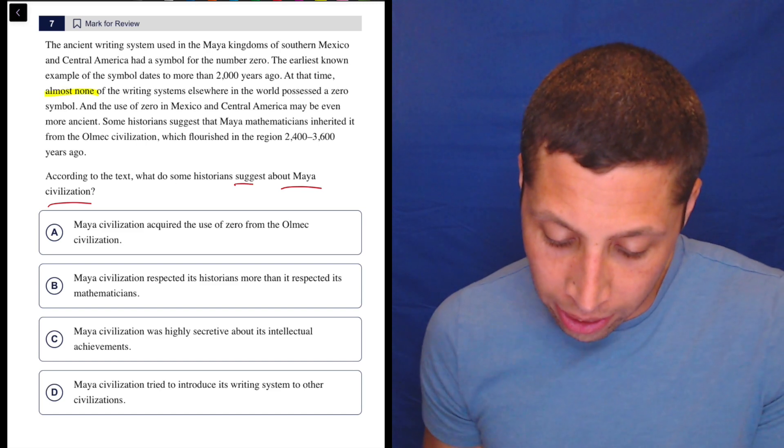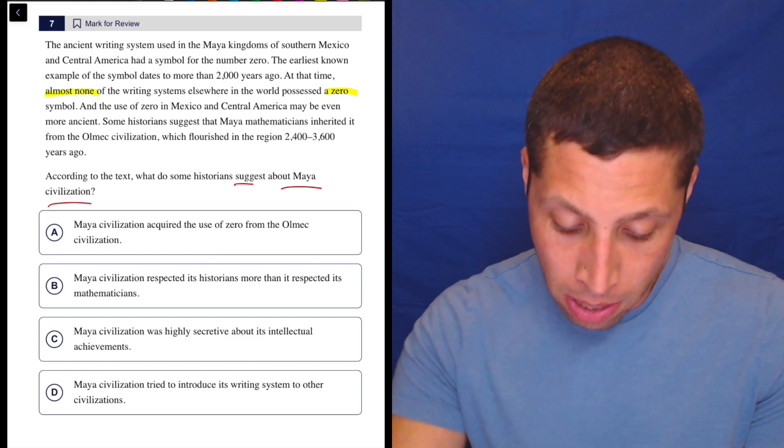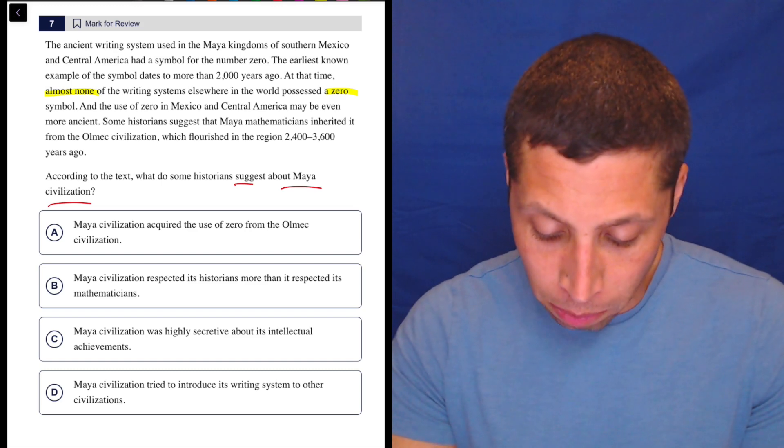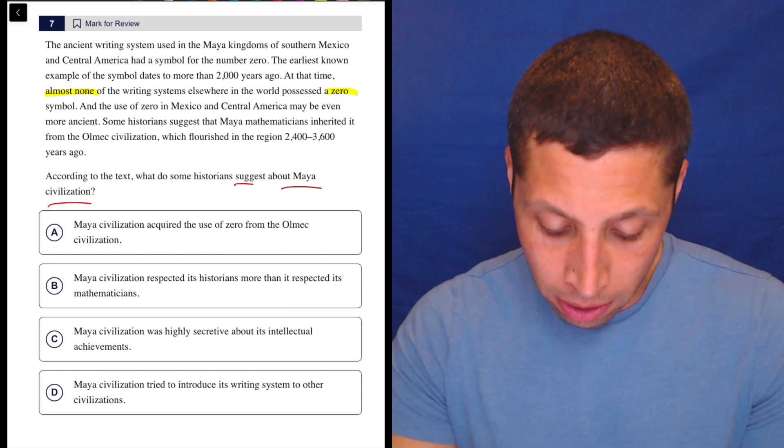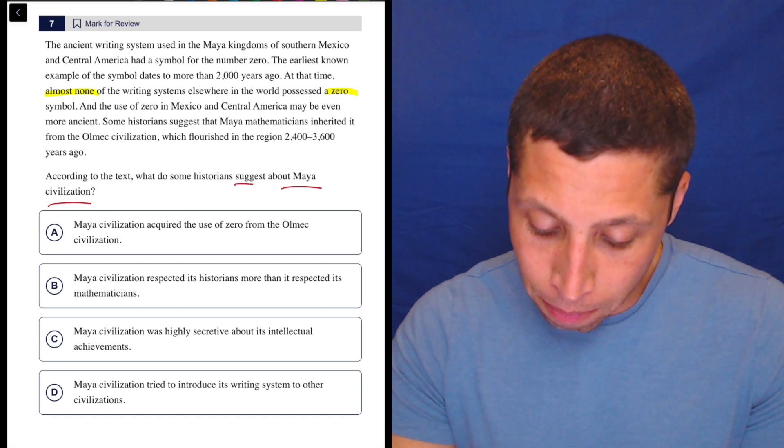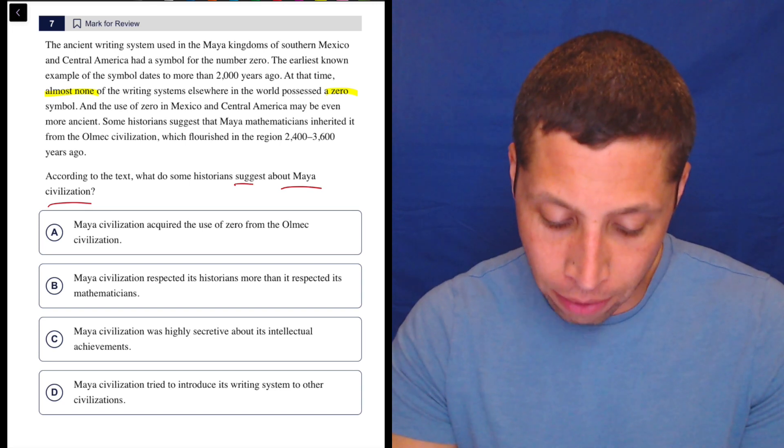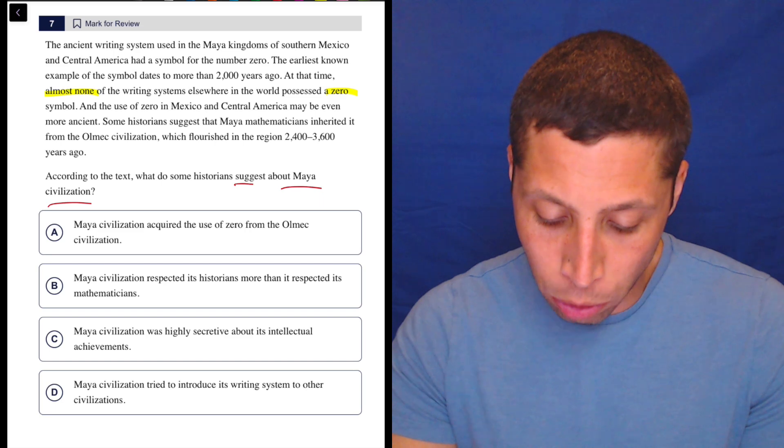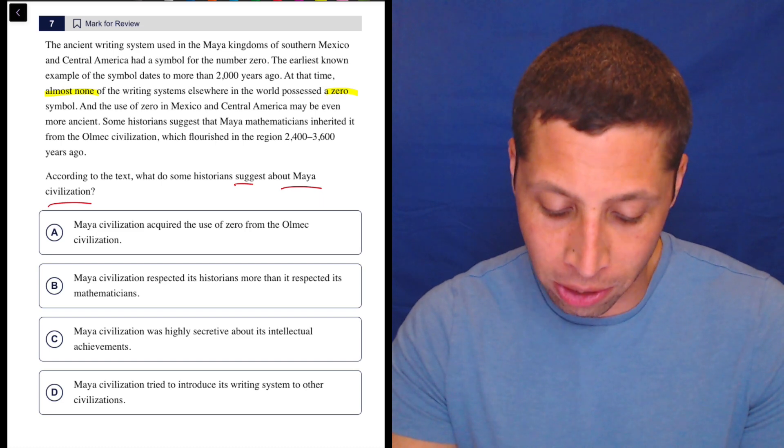At that time, almost none of the writing systems elsewhere in the world possessed a zero symbol. And the use of zero in Mexico and Central America may be even more ancient. Some historians suggest that Maya mathematicians inherited it from the Olmec civilization, which flourished in the region 2,400 to 3,600 years ago.